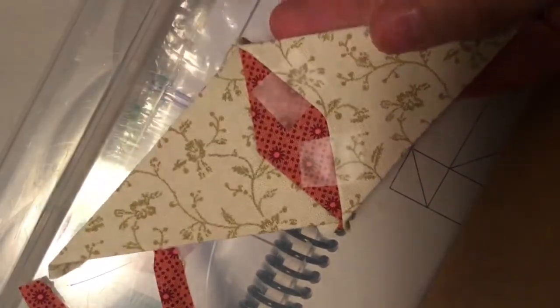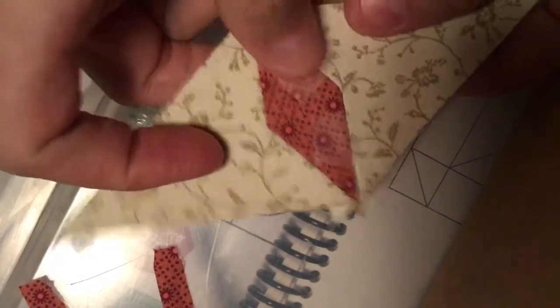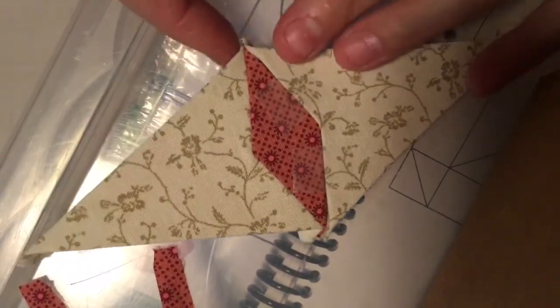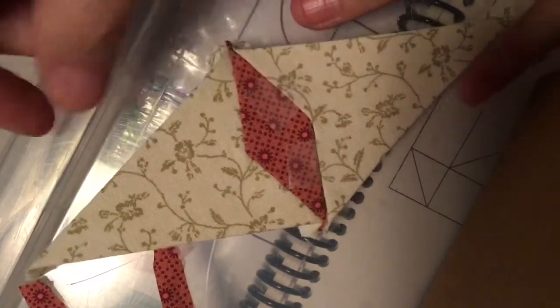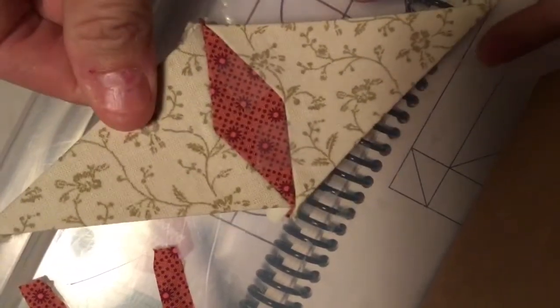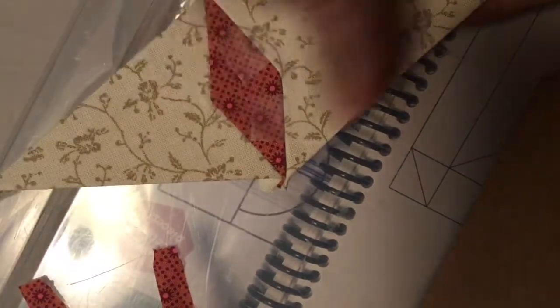Once I have this connected, I'll be able to put on my side pieces. Now I'm going to add the sides. I'm going to take my piece and line it up here in the corner.